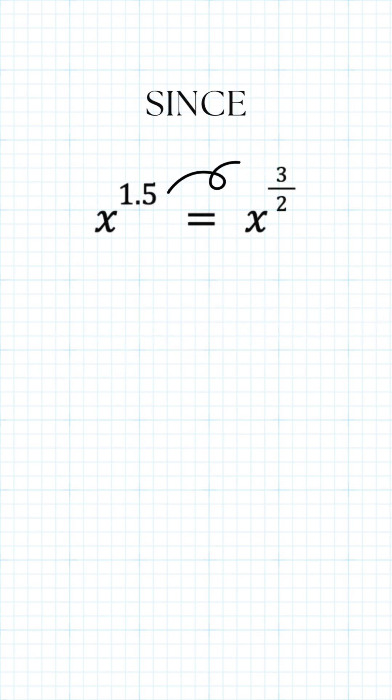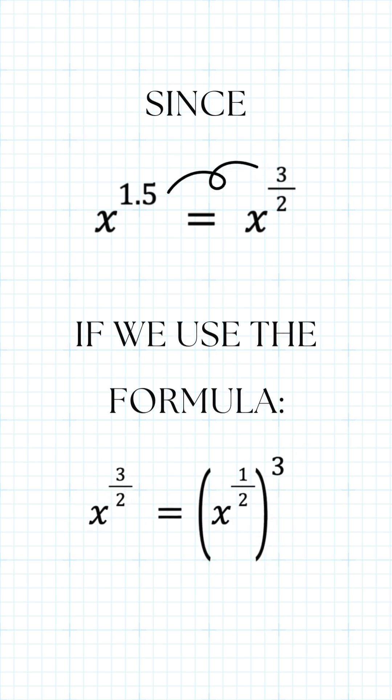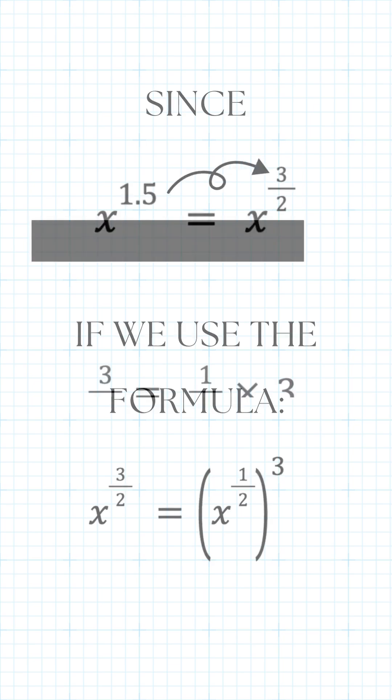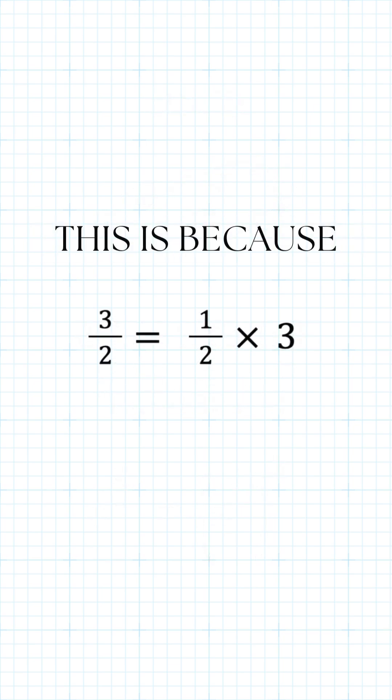So since x to the power of 1.5 is equal to x to the power of 3/2, if we use the formula, x raised to the power of 3/2 is the same as x raised to the power of 1/2 and that whole thing cubed. This is because 3/2 is the same as 1/2 times 3.